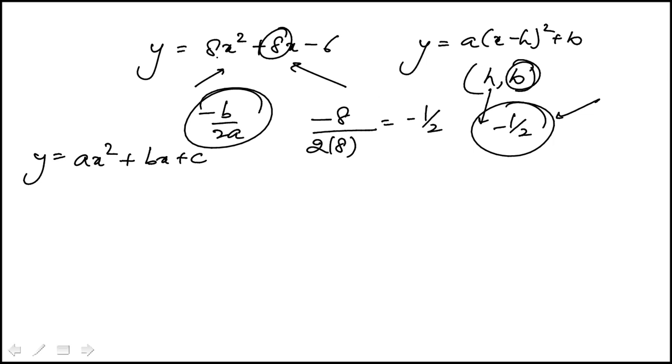To find k, you would take minus half, which is really the y-coordinate of the vertex. You replace x with minus half.